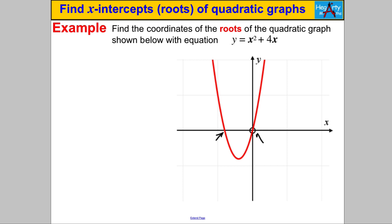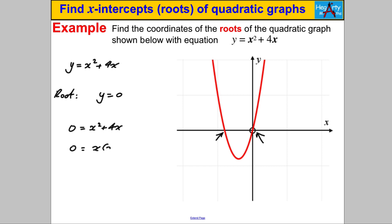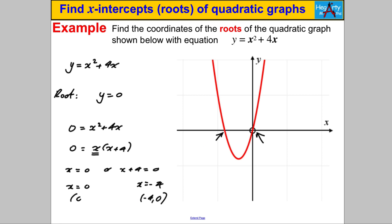Let's have a go at another one — pause the video and have a go. We're trying to find the roots of y = x² + 4x. At the roots, y = 0, so we solve 0 = x² + 4x. We factorize by taking out a common factor of x: 0 = x(x + 4). So x = 0 or x + 4 = 0, giving x = 0 or x = -4. The coordinates are (0, 0) and (-4, 0). The graph passes through the origin and (-4, 0) is to the left of the y-axis. That's it for this video — thanks for watching!